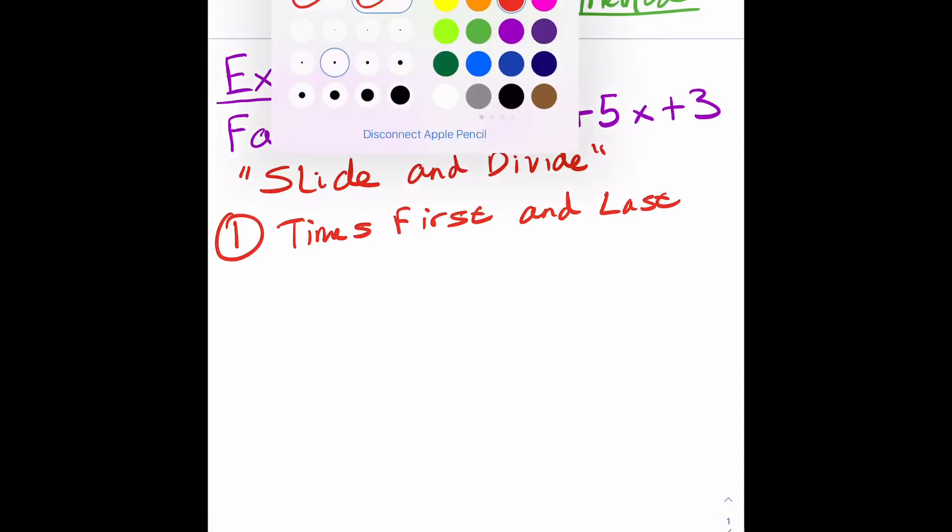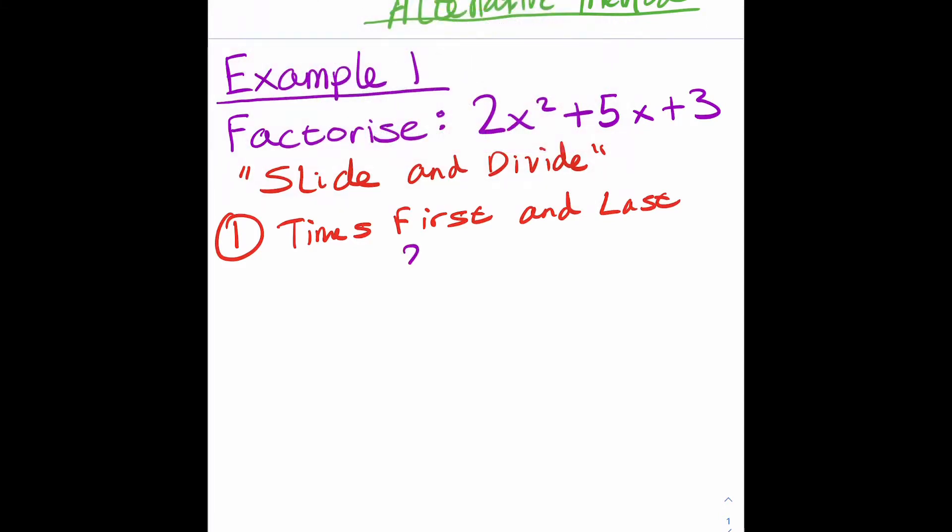Let's wait until I catch up with the writing. So 2 times 3 is obviously 6. The next step is to now make a new trinomial. Instead of trying to factor the original one, we're going to make a new one by taking the x squared plus the 5x, which is the middle term, but now instead of adding 3 we're going to add the 6 that we just made. So you'll end up with x squared plus 5x plus 6.